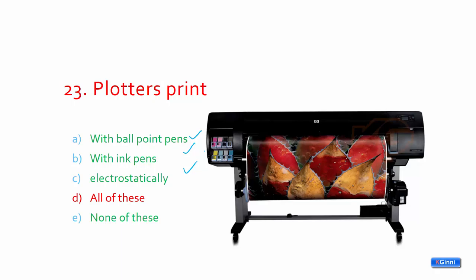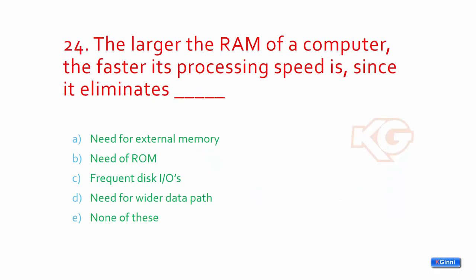The larger the RAM of a computer, the faster its processing speed, since it eliminates? Need for external memory, need of ROM, frequent disk I/Os, or need for wider data path? The option which is pretty close and exact is frequent disk I/Os. So the larger the RAM, it is inversely proportional to the frequent disk I/Os.